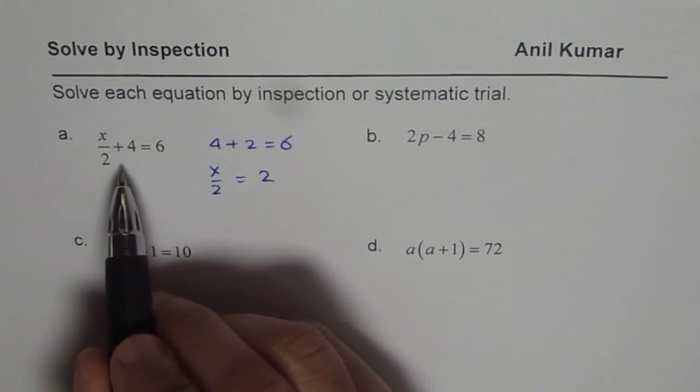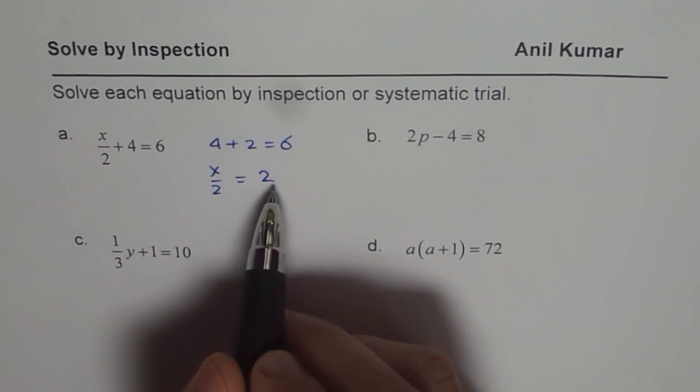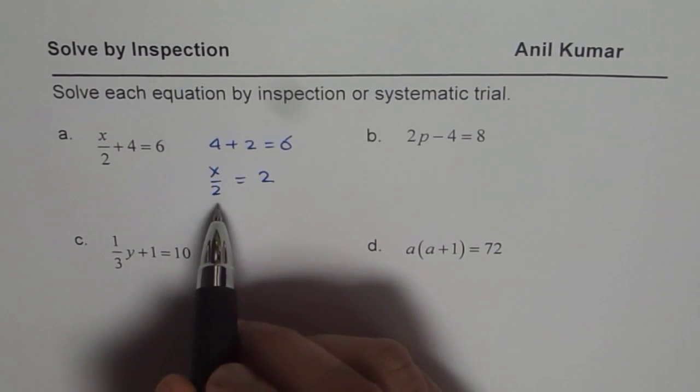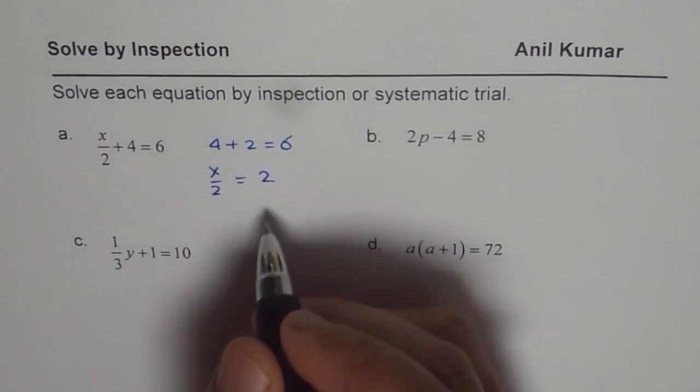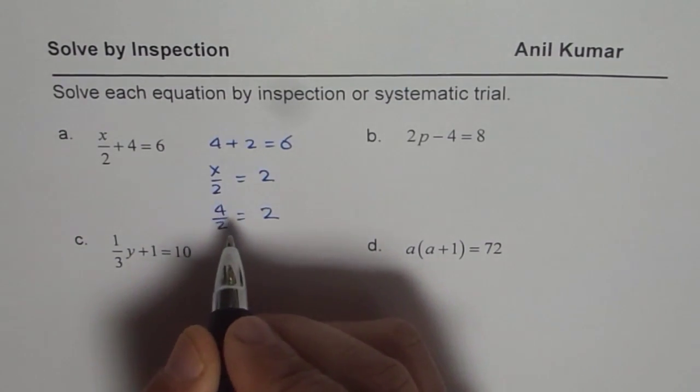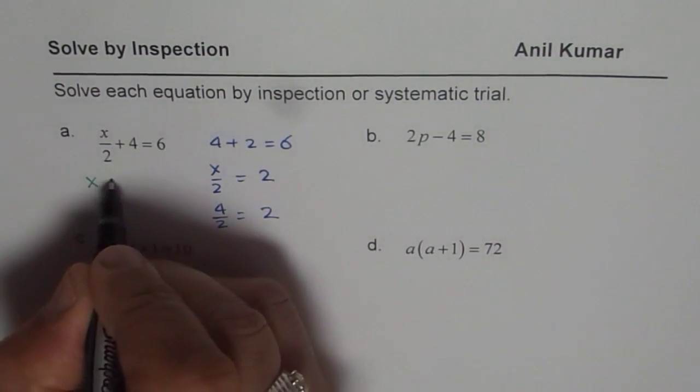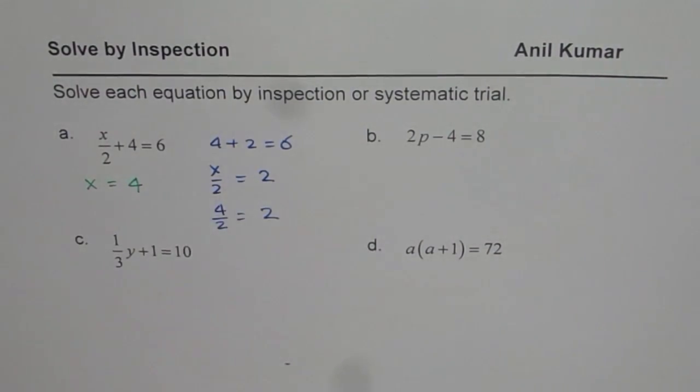So you look at it and say, well, 4 plus 2 is 6. And this x over 2 or half of a number should be 2. So half of which number is 2? It is 4. I know 4 half is 2. And therefore, we get our solution. So we say now the solution is x is equal to 4. You get the idea. So that is how you can get the solution of an equation.